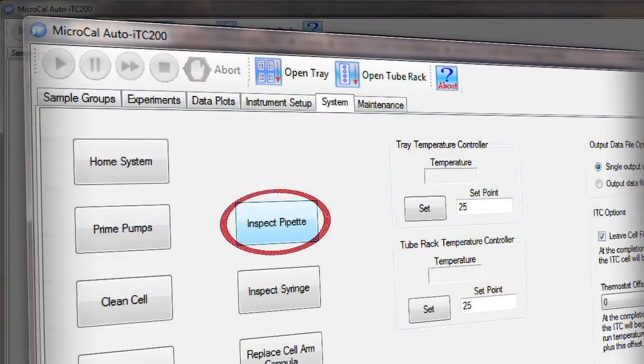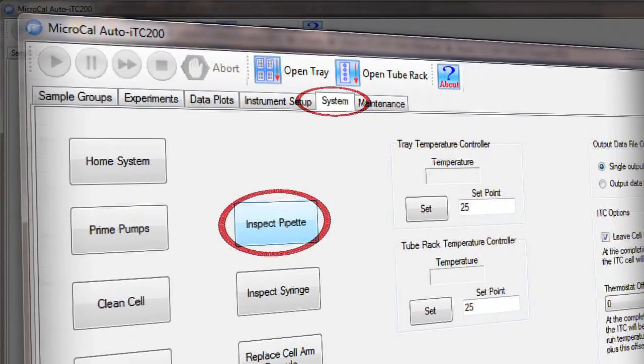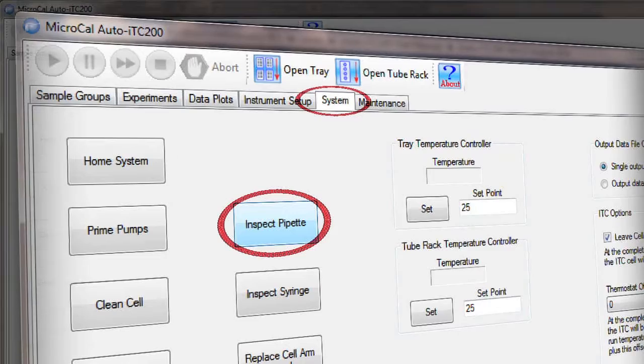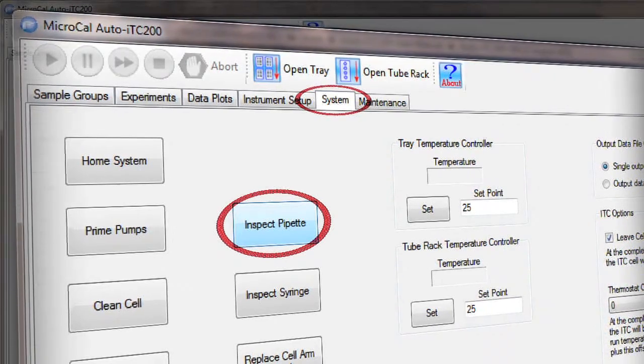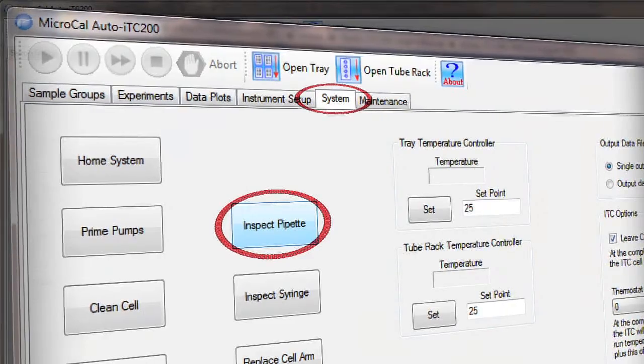Then you click the inspect pipette button in the system tab of the Auto ITC 200 software. This brings the pipette arm around to the front where it's more easily accessible. Now we can open the door.